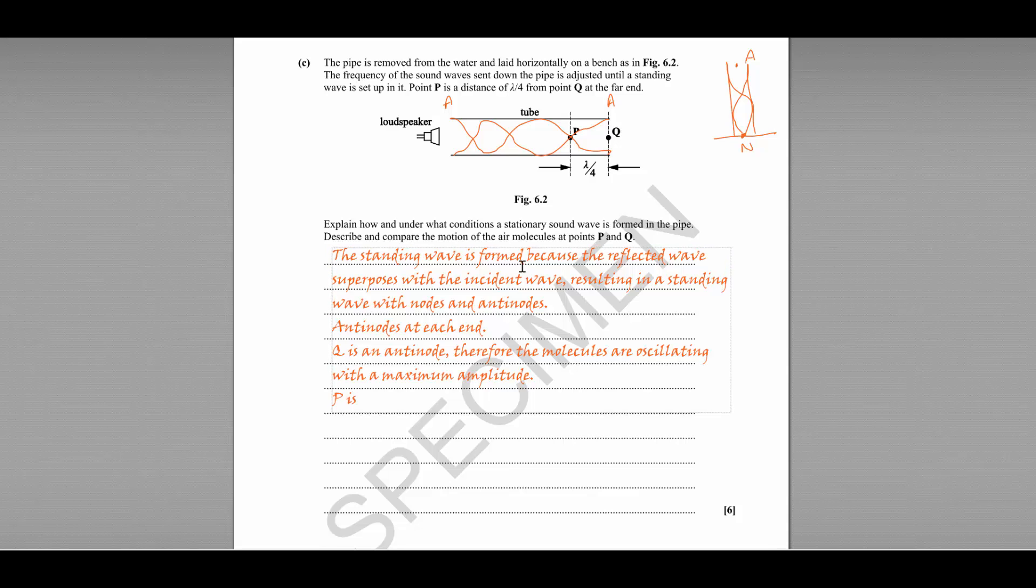Whereas P is a node. We know this because the distance from anti-node to anti-node is half a wavelength. So the distance between a node and an anti-node is a quarter of a wavelength.